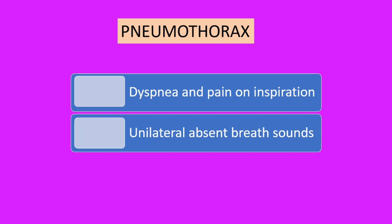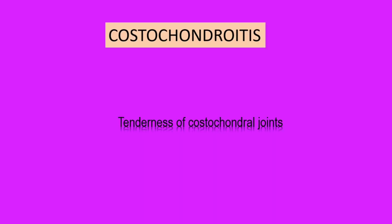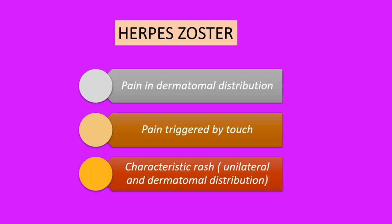Patients with pneumothorax have dyspnea, pain on inspiration, unilateral absent breath sounds, and a resonant percussion note on the affected side. Patients with pneumonia can also present with chest pain; there is a history of fever and localized chest pain, which can be pleuritic. Findings include egophony, ipsilateral dullness to percussion, and a friction rub may be present.